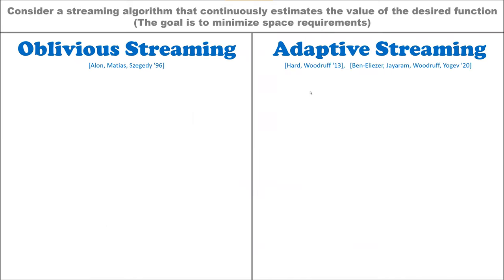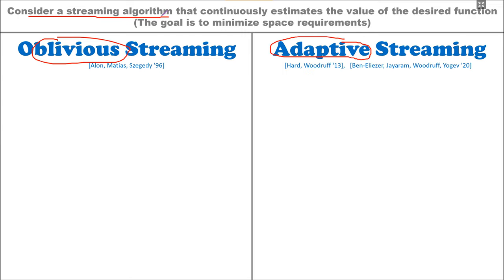I want to start by comparing the classical or oblivious streaming model to the adaptive or adversarial streaming model that we will be talking about today. In both cases, we will consider a streaming algorithm that continuously reports an estimation for the value of the function that it is tracking — for example, estimating the current number of distinct elements seen in the stream at any given point.